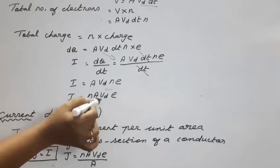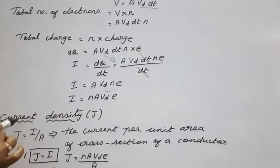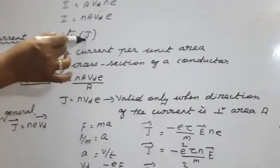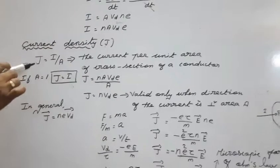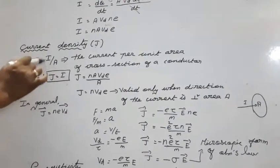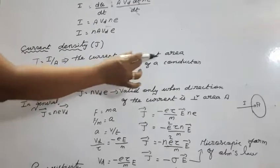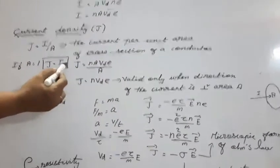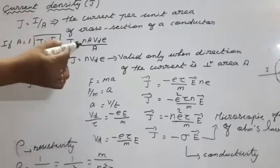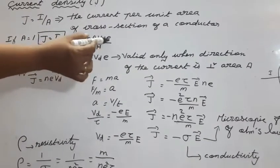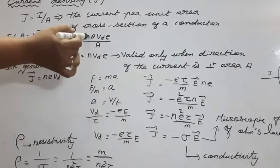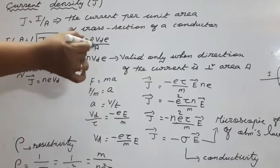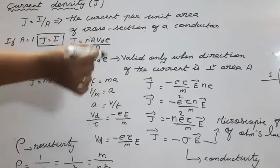Next, we calculate the current density. Current density is represented by the letter J, defined as J = I/A, which is current per unit area of cross-section of the conductor. If A = 1, then J = I. Substituting I = n·e·A·v_d into J = I/A, the area A cancels, giving J = n·e·v_d.